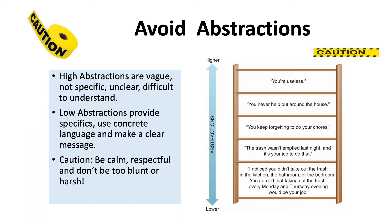A lot of times people are hurt by bluntness because we're comfortable in that relationship — they might not tell you that, but we do want to be careful. So high-level abstractions are vague; low-level abstractions are specific. The ladder you see here on the right is actually in your textbook. If somebody says to you 'you're useless,' that is a high abstraction — it is very vague. What does that mean? We don't have any clue. That is not a clear message; we don't even know the context, so it is not effective.